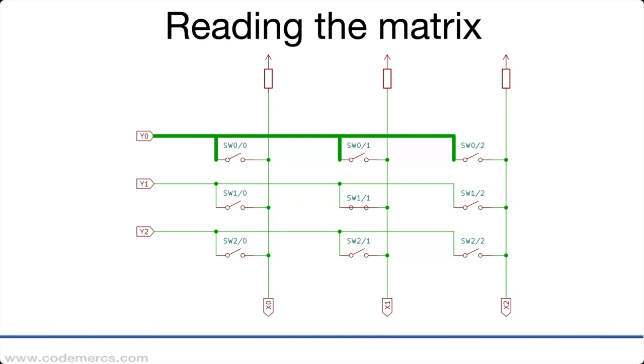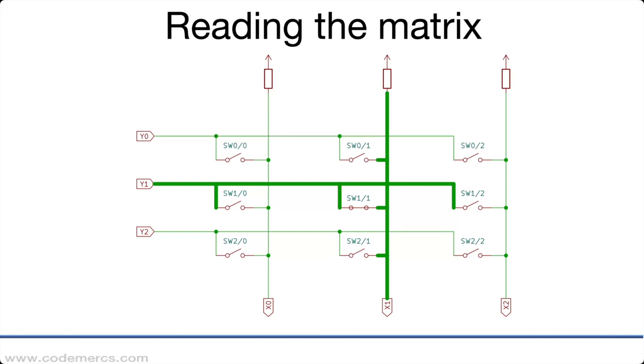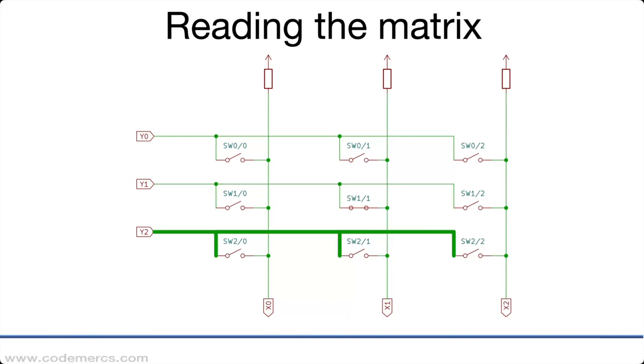Now we have the situation where one key is pressed. Y zero is pulled low. Since there is no key closed on that line there's still no reaction. All of the x lines remain high. Then the y one line is pulled low and we have a key pressed on the coordinate x1 y1. Subsequently the x1 line is pulled low and the controller now sees that there is an active key. On y2 again there is no key pressed so no reaction.